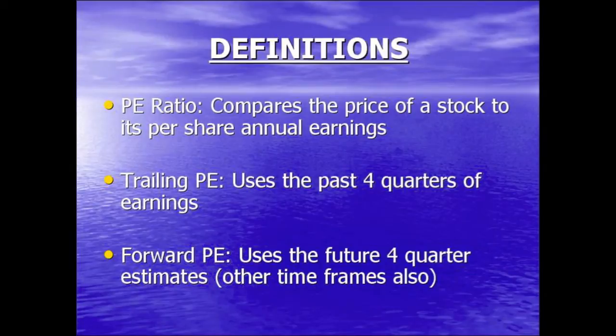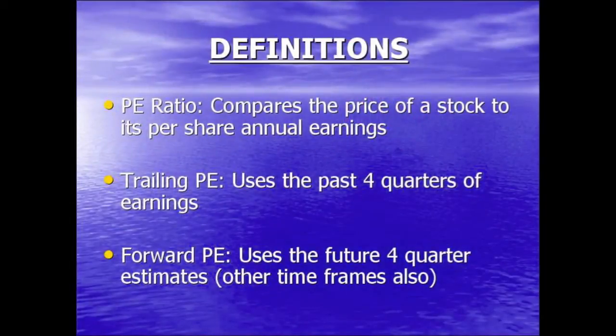Well, Dana, there are two ways to calculate target price. One is using technicals, and the other is using fundamentals, as you alluded to in your question. More specifically, you mentioned the P.E. ratio, so let's focus in on that. The P.E. ratio is the price of a stock divided by its earnings over an annual period of time. There are two types of P.E. ratio: the trailing P.E. uses the previous four quarters of earnings, whereas the forward P.E. uses the next projected four quarters of earnings.